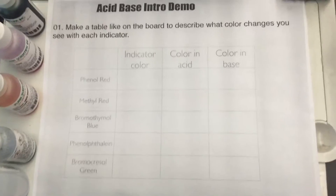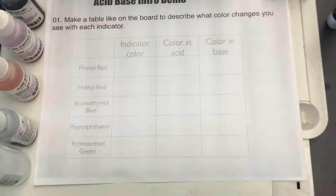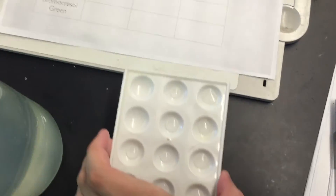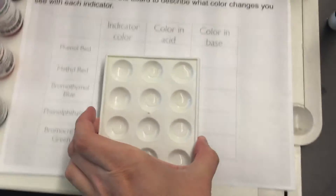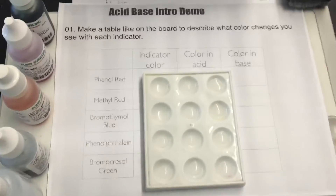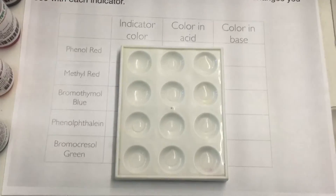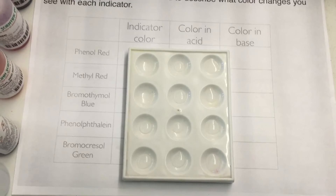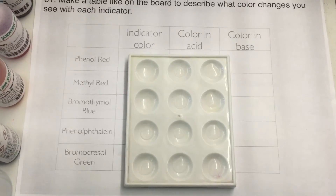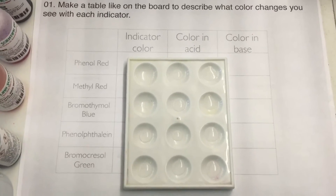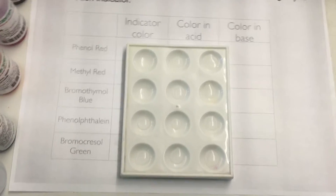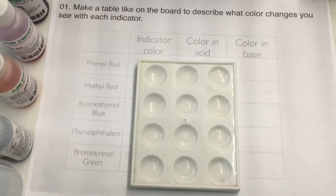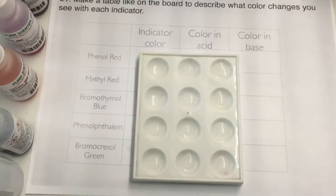For those of you that already have, what I have here is a little dish with a couple of drops of acid and base in each one, and I'm basically just going to go through all of these different indicators and we'll fill in the columns as you see the color form.